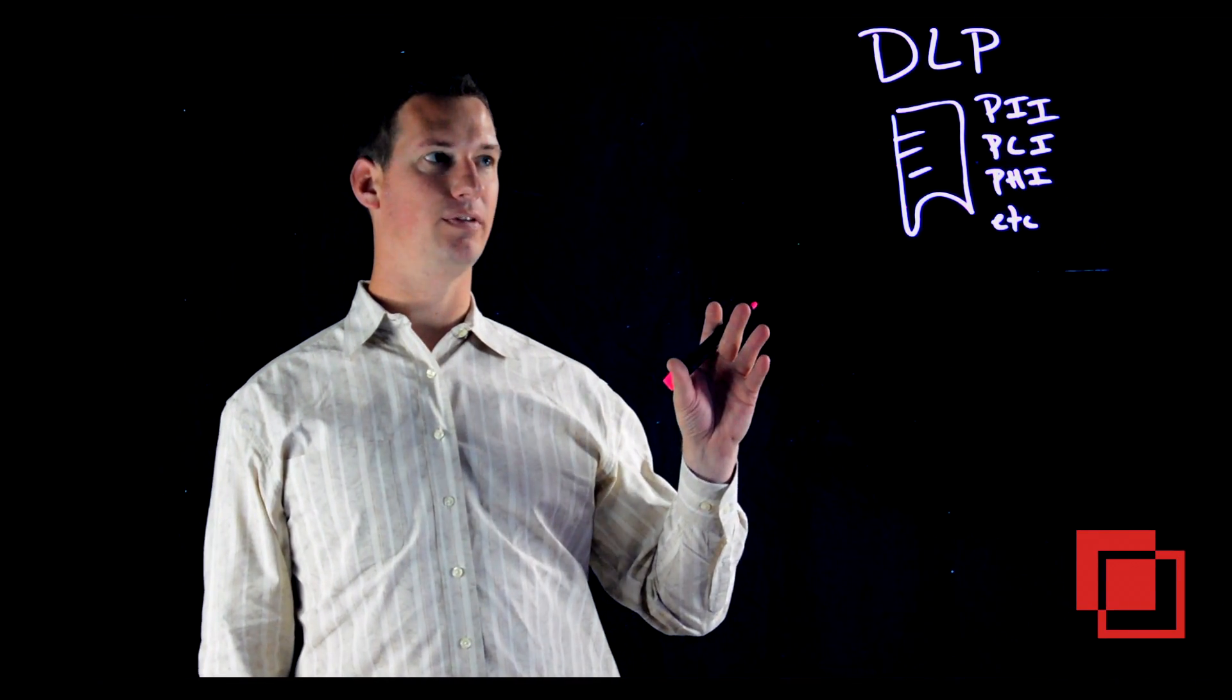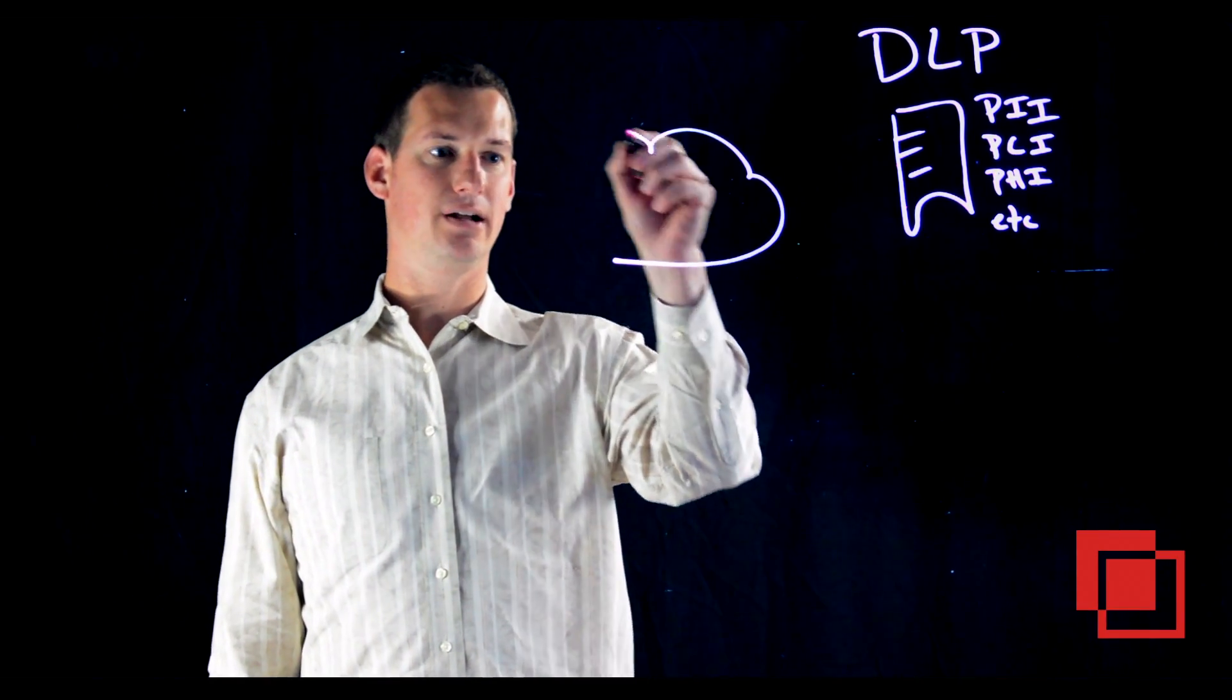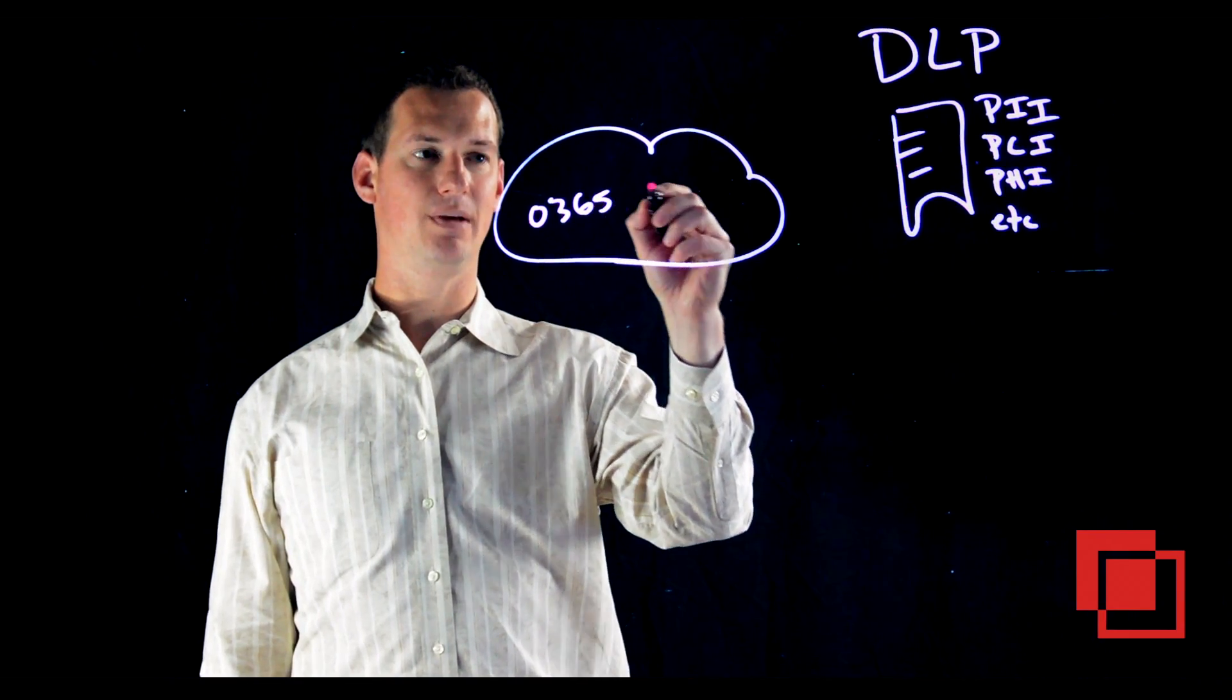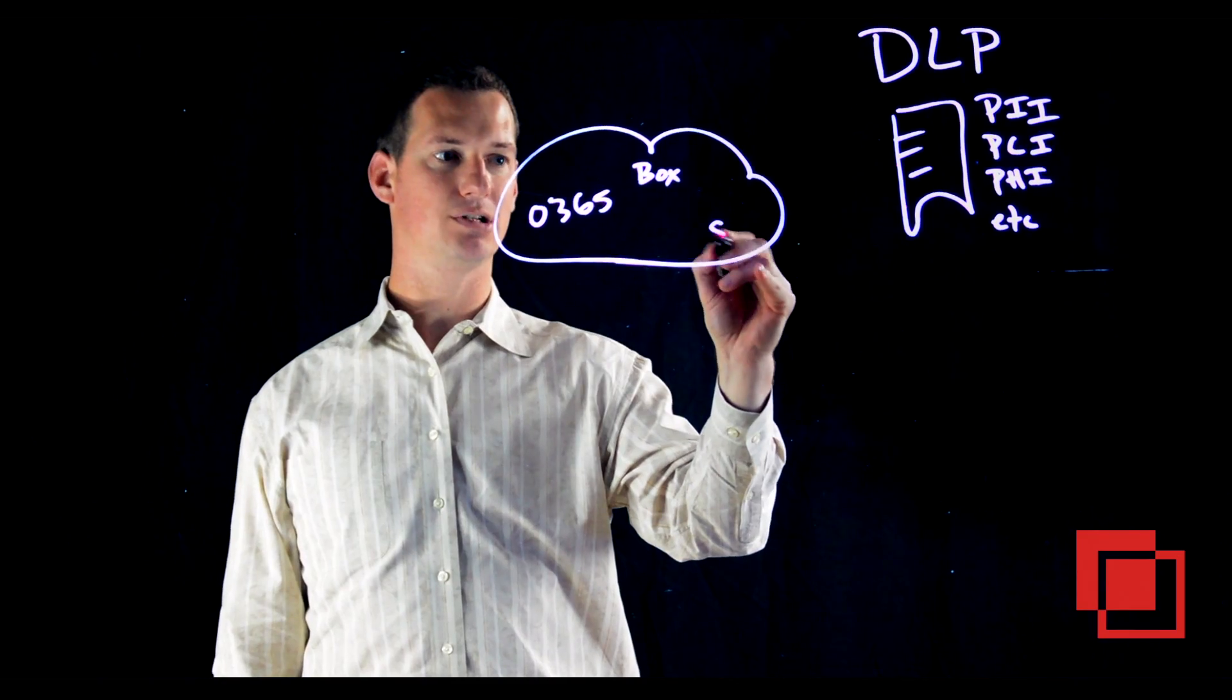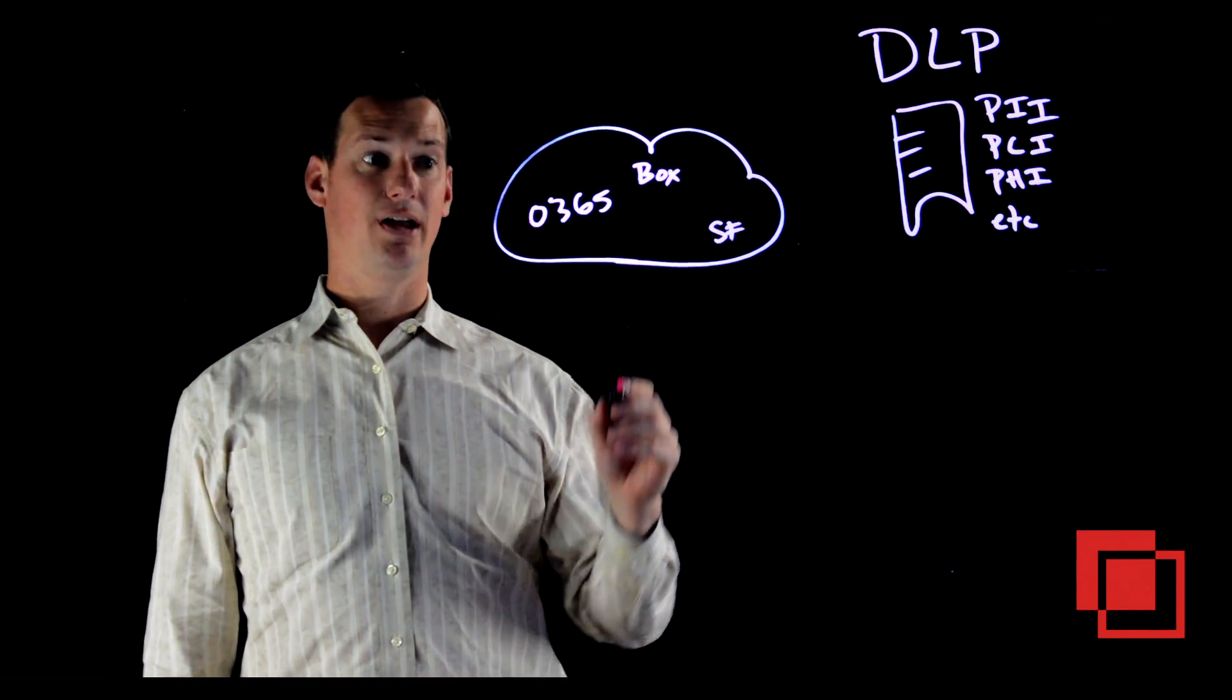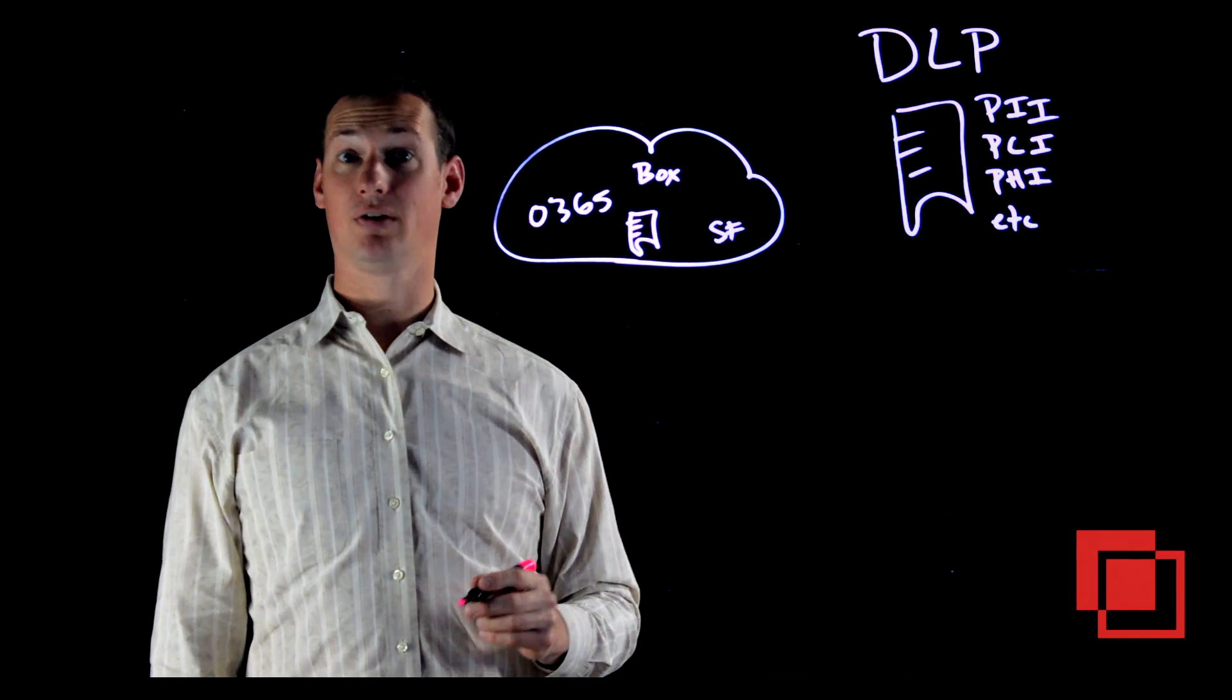But from a perspective of identifying information, there's a couple places to look for it. So inside of cloud applications, things like Office 365, maybe some enterprise file sync and share application like Box or even Salesforce from a CRM perspective, there can be data inside of it that's sensitive. And you may want to look for a couple different things.